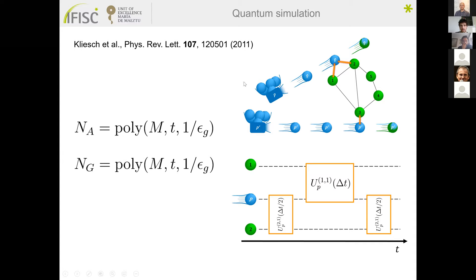Finally, we have shown that our multi-partite collision model protocol can be implemented as a quantum algorithm on a quantum computer. It is efficiently simulable, requiring a number of ancillas and gates that is a polynomial function of the number of subsystems, time, and required precision — the necessary conditions for a quantum algorithm to be efficiently simulable on a quantum computer.